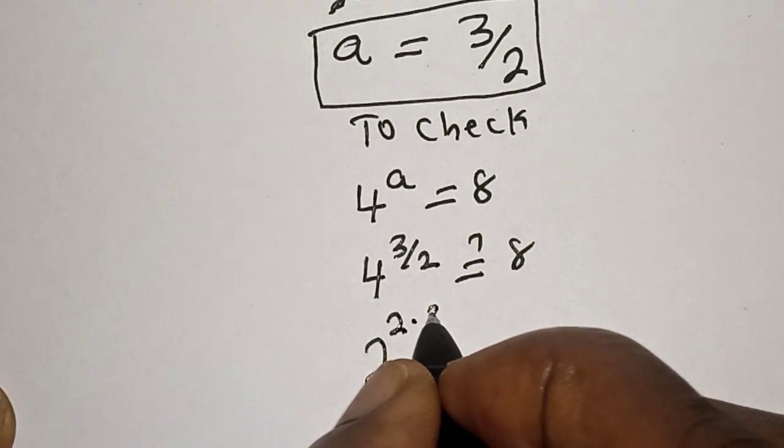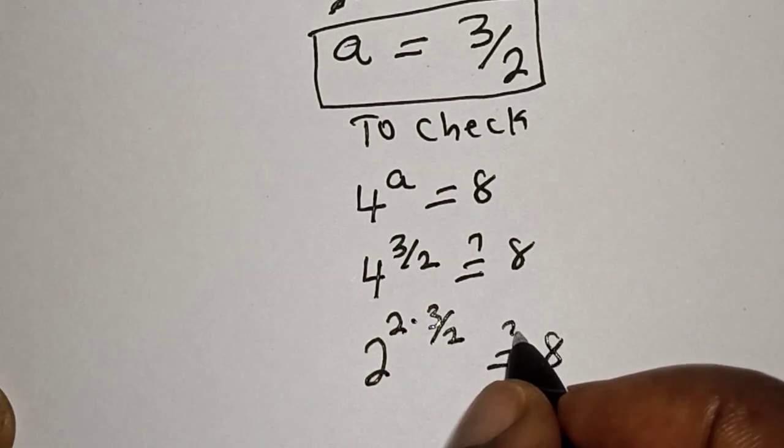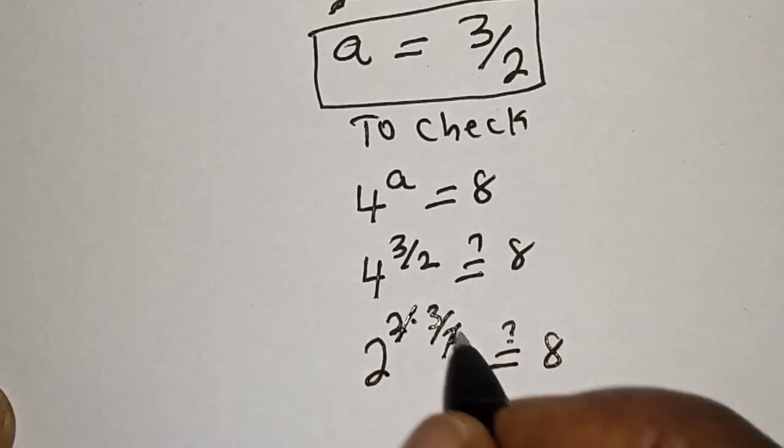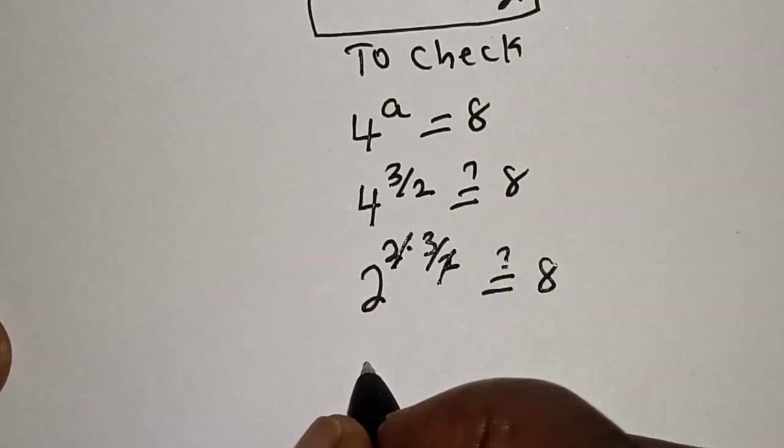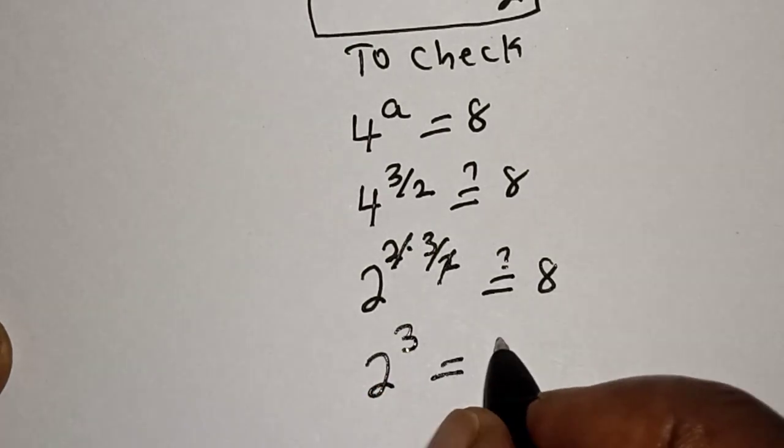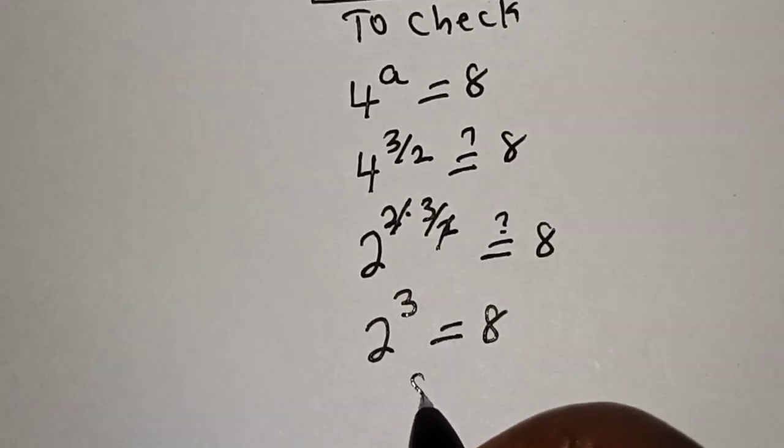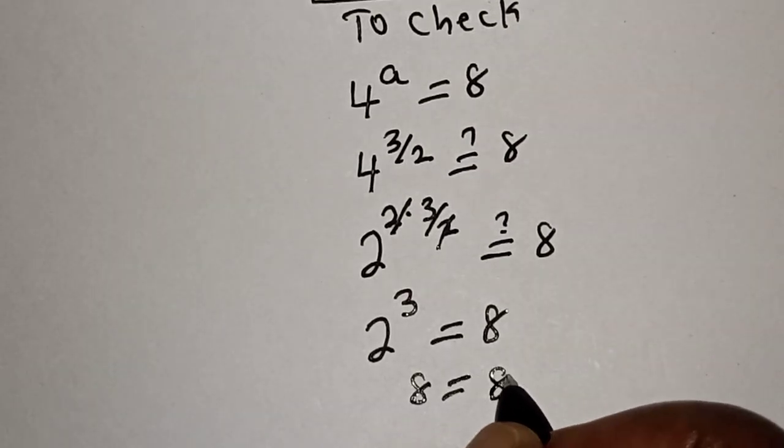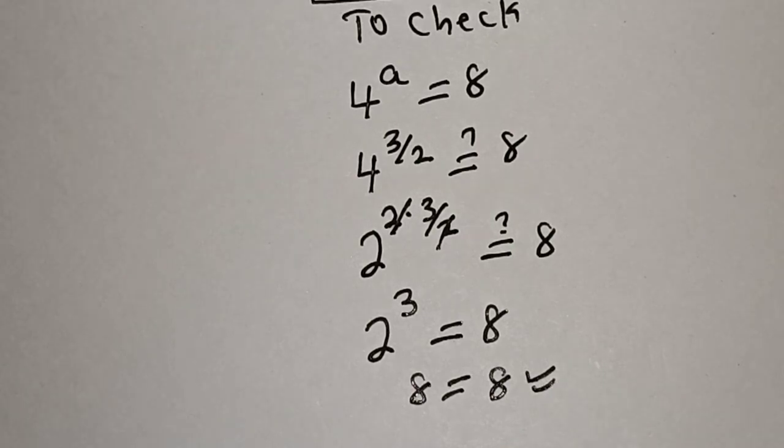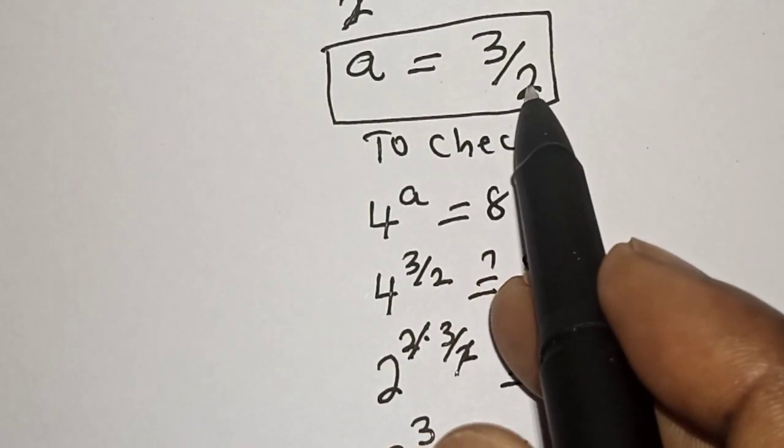2 square to the power of 3 over 2 must be equal to 8. This one cancel this and we have 2 to the power of 3, this is equal to 8, meaning that the left hand side 8 is equal to 8, is equal to the right hand side 8, which satisfies the given equation at a equal to 3 over 2.